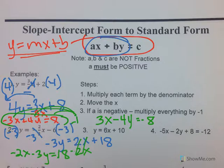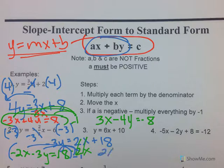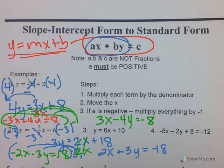Something is wrong because a is negative, so I have to multiply everything by negative one. A negative times a negative makes a positive, so you get two x plus three y equals negative eighteen. That's your final answer.